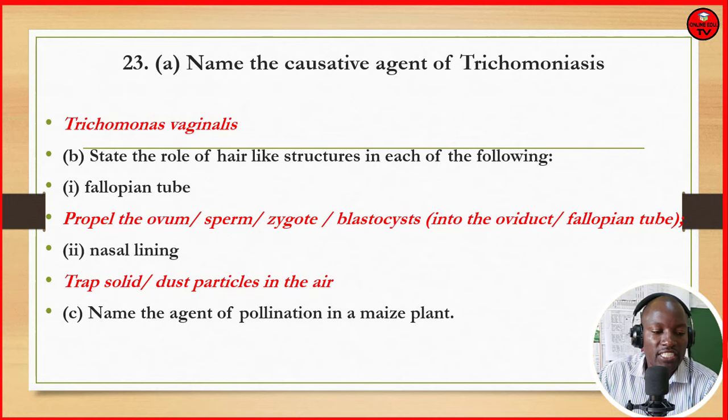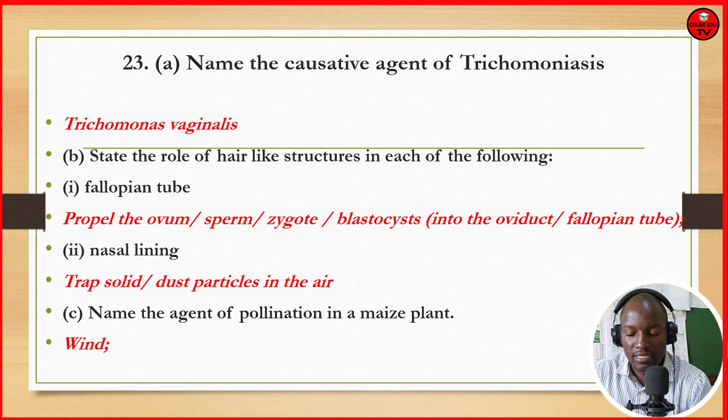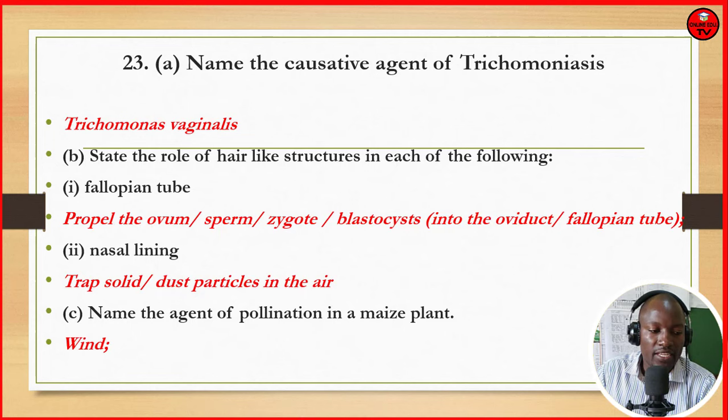Name the agent of pollination in a maize plant — the agent is wind.